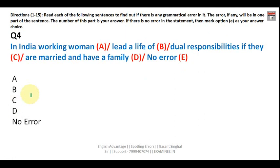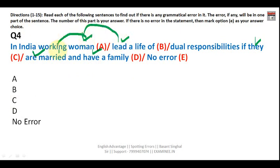Question four: 'In India, working woman leads a life of dual responsibility if they are married and have a family.' Notice the verbs 'lead,' 'are,' and 'have' — all plural. So the subject must also be plural. 'Woman' is singular, so you must write 'women' (W-O-M-E-N). We are talking about a group of working women, not one woman. Your answer is A: 'In India, working women lead a life of dual responsibility.'